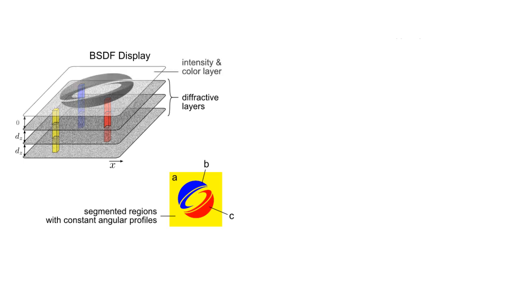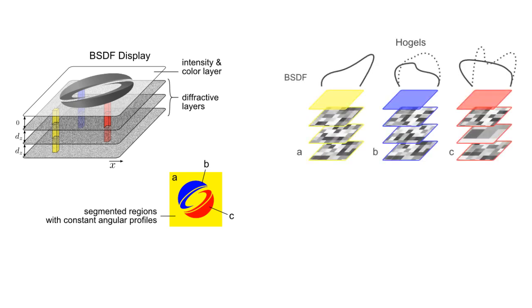Conceptually, our design uses multiple stacked diffractive layers with spacers. The target image is segmented into several regions that each have a constant angular profile. Intensity variation over the display surface can be achieved with an additional intensity or color layer that has larger, non-diffractive features. Just like pixels in a conventional image, our displays are composed of holographic elements, or HOGLs.